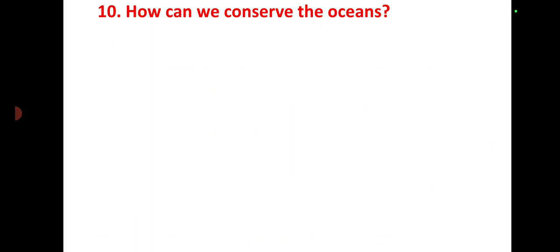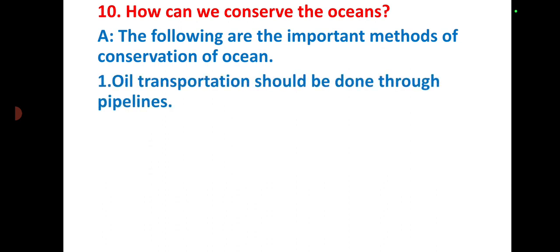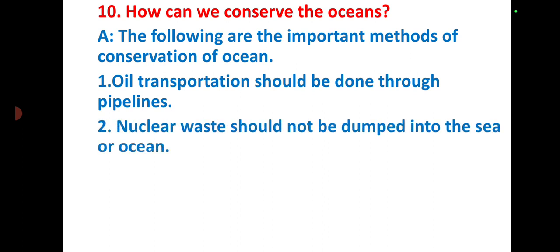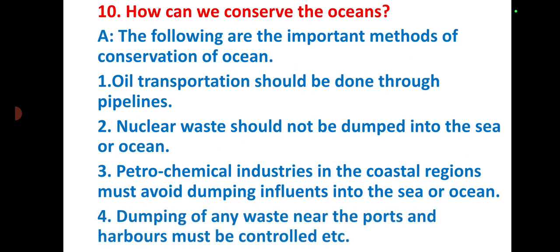How can we conserve the oceans? The following are important methods: oil transportation should be done through pipelines; nuclear waste should not be dumped into the sea or ocean; petrochemical industries in coastal regions must avoid dumping effluents into the sea or ocean; and dumping of any waste near ports and harbors must be controlled.